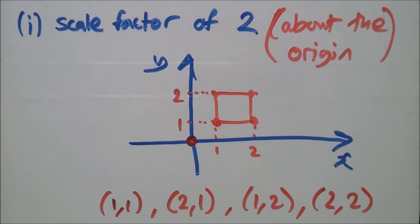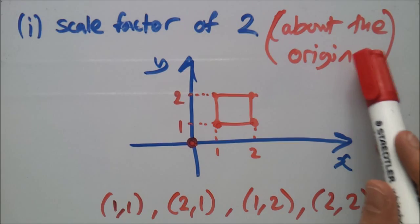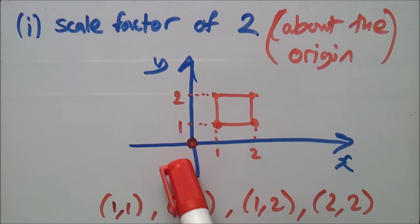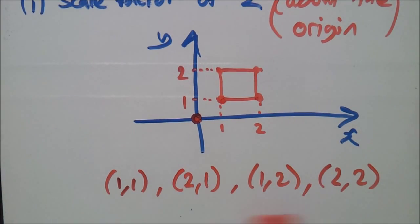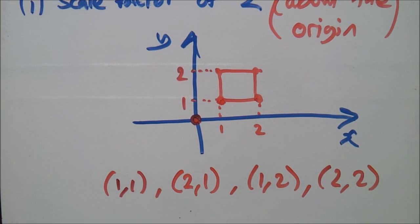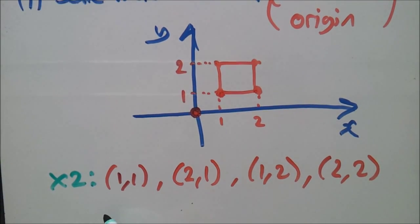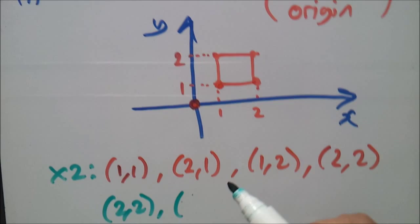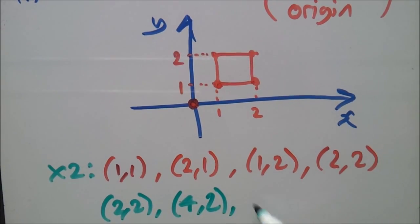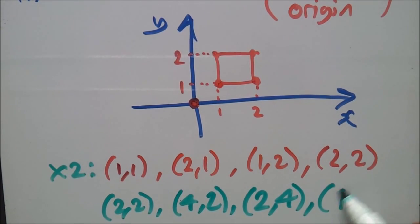When they tell you to find a scale factor of two about the origin, it means you multiply every single coordinate — both x and y — by two. So we multiply everything by two: (1,1) becomes (2,2); (2,1) becomes (4,2); (1,2) becomes (2,4); and (2,2) becomes (4,4).